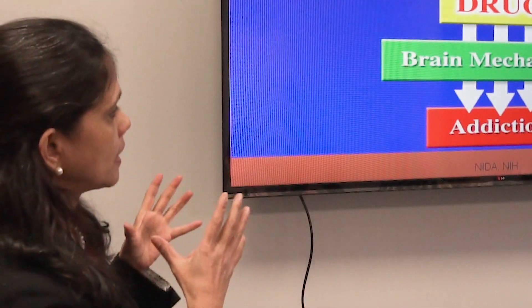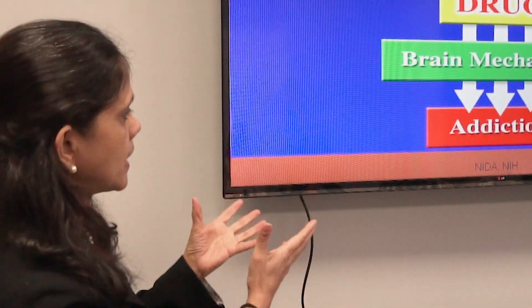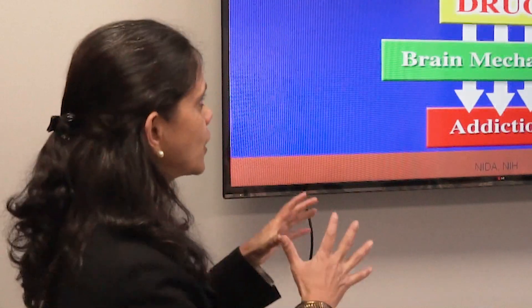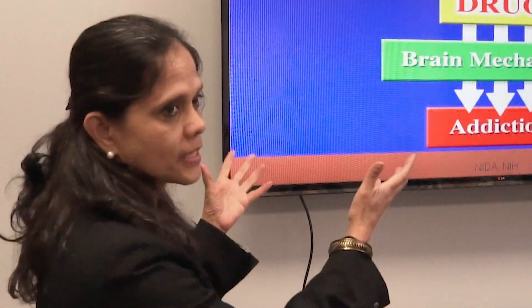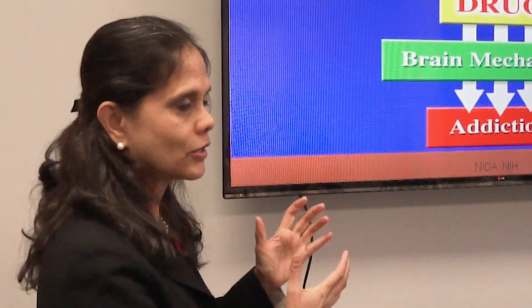Addiction is very much like functional medicine. This is from conventional care — this is NIDA, the National Institute of Drug Addiction. Their chart is very much like a functional medicine chart. They're saying that biology and genes plus the environment affects the patient, their drug of choice, and the drug affects the brain, and changes in the brain lead to addiction. It's a very comprehensive model.